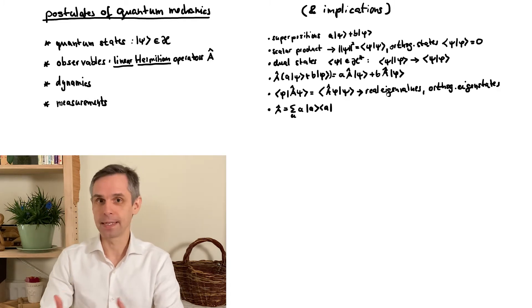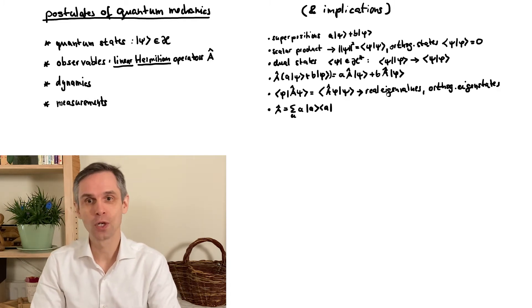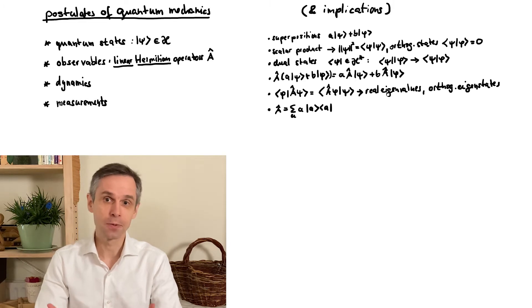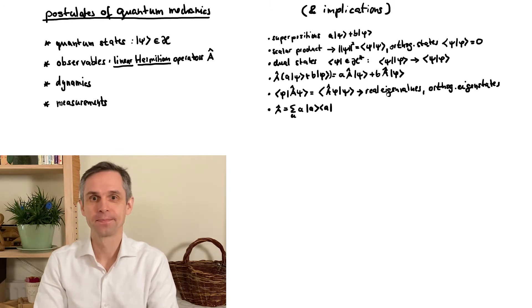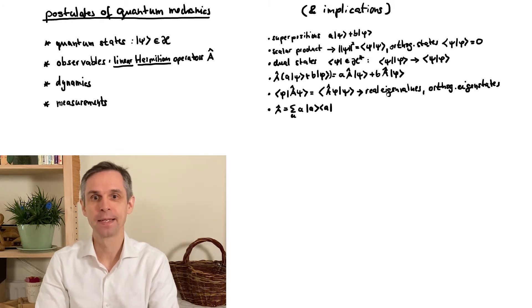Now it may also happen that the eigenvalues cover a range of real numbers, or that there is a combination of both. Parts of the sum may therefore sometimes be replaced by an integral. And there are cases where different eigenstates have the same eigenvalues, but while this implies some interesting physical insights into these systems, all of this will never result in any real complications.